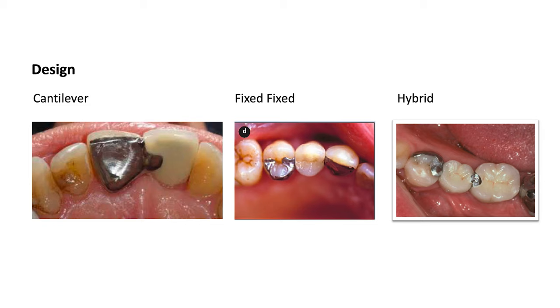Moving on to the design, there are mainly three types you can use: a cantilever, which is a pontic from one abutment tooth; a fixed-fixed bridge, which is attached to two abutment teeth; and finally a hybrid, which has a resin bonded wing or retainer on one abutment tooth and a crown or conventional retainer on the other abutment tooth.